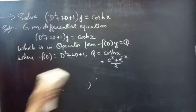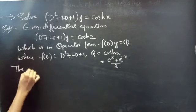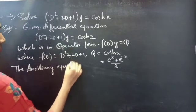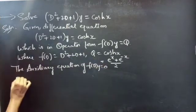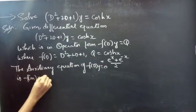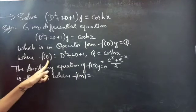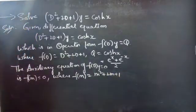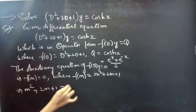Firstly, let's find the complementary function. The auxiliary equation of f(D)·y = 0 is f(m) = 0, where we replace the differential operator D by m. Then f(m) = m² + 2m + 1. So the auxiliary equation becomes m² + 2m + 1 = 0.